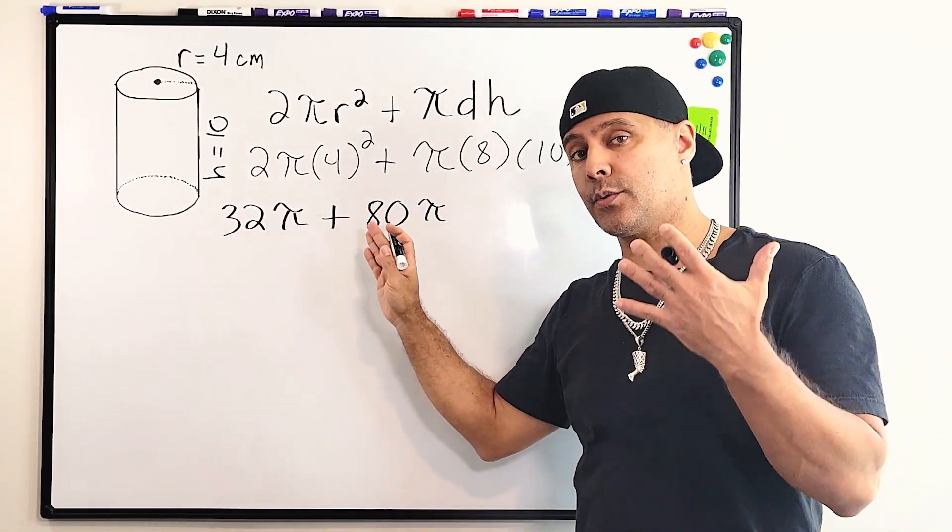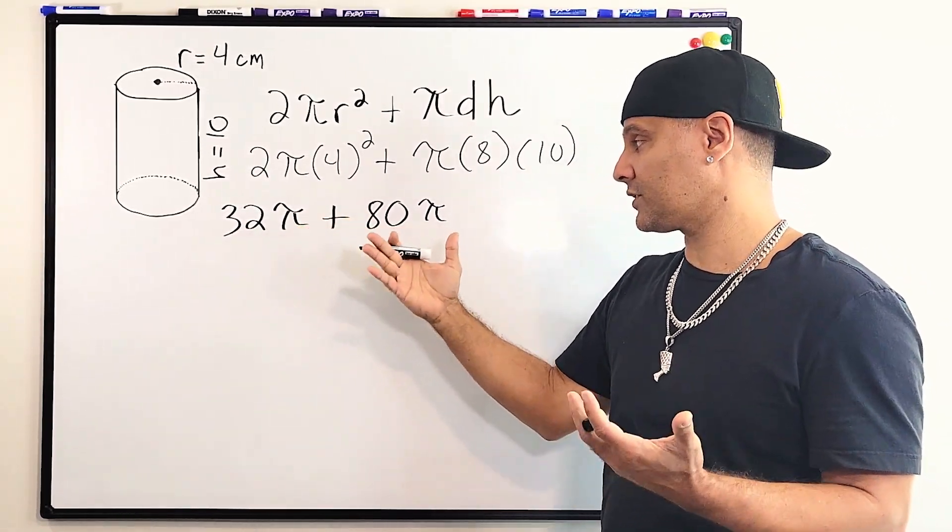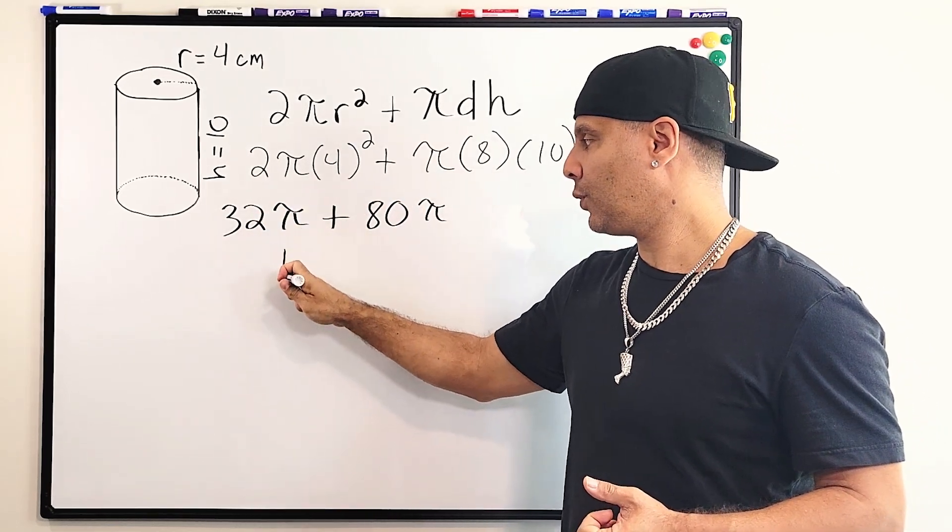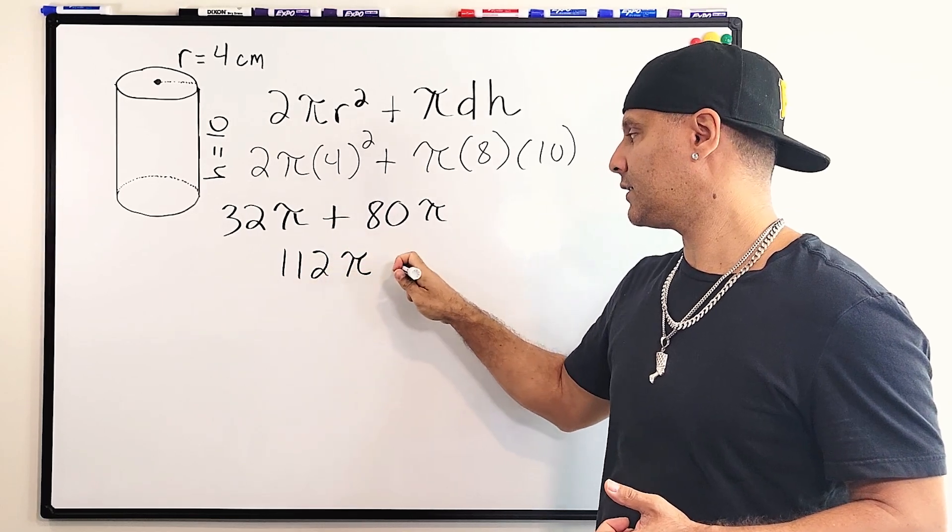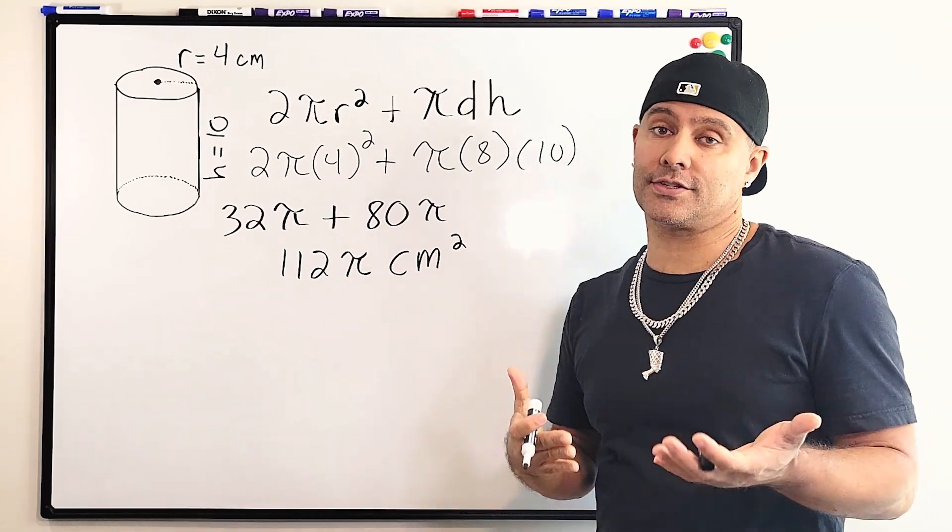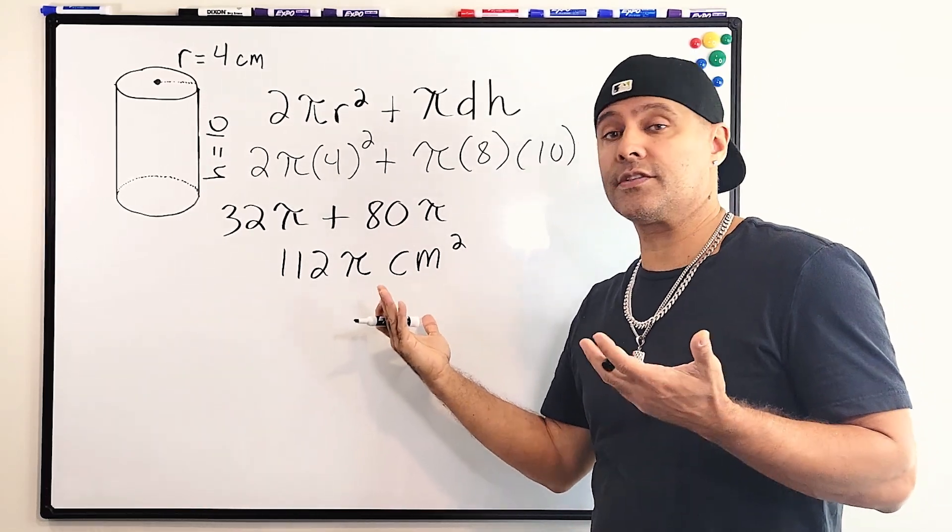Alright, now we have two terms in our equation and we just have to combine them because they're like terms. So 80 plus 32 is 112π square centimeters. Now, if you were asked to solve in terms of π, we would be finished. This would be our answer.